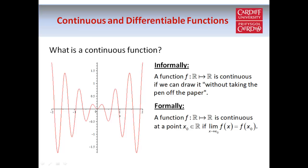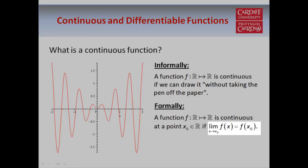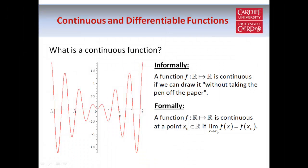To be more precise, we say that a real-valued function defined on the set of real numbers R is continuous at a particular point if the limit of the function as x approaches that point is equal to the value that the function actually takes at that point. In this definition, we're using x₀ to represent a fixed value of x, so when we talk about x approaching x₀, we're talking about x approaching a certain fixed point.